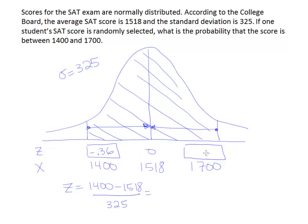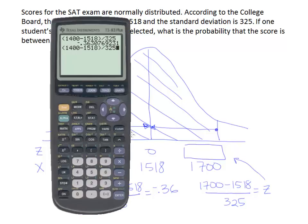Then I need to convert 1700, so I'll do the same thing. This time it'll be 1700 minus 1518 divided by 325. That's the second z-score. In my calculator, I'm going to bring up the same calculation I had before, but change this 1400 to 1700. I press enter and I get 0.56 as a decimal.